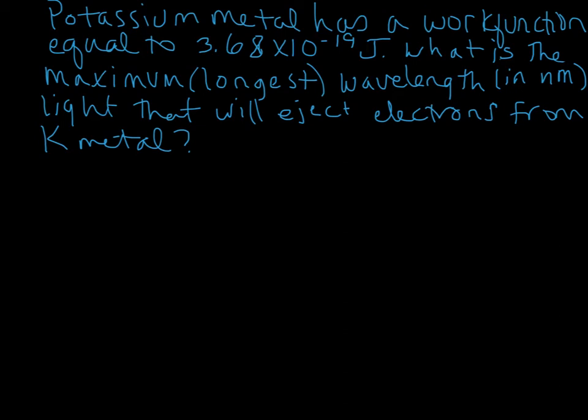Now we're going to do another photoelectric example, and in this case we are looking for a threshold wavelength. That is the longest wavelength that has barely enough energy to eject electrons from a particular metal. In this case we have potassium metal, and we're given its work function: 3.68 times 10 to the negative 19 joules. We want to figure out the longest wavelength in nanometers that will eject electrons from potassium metal.